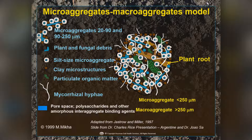Macroaggregates are very easy to break up — anytime we do tillage, they fall apart. Eighty percent of your carbon is stored in these macroaggregates, along with a lot of water and nutrients. They're breaking down and reforming all the time, which is good for the soil. The macroaggregates are also a big food source; bacteria eat the glues in there. Once you do a bunch of tillage, you eat up all these glues and you're left with just microaggregates, resulting in a compacted soil.